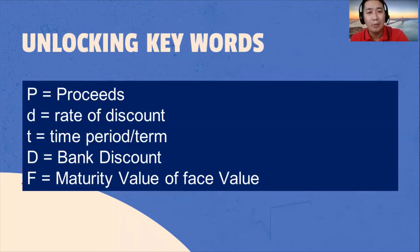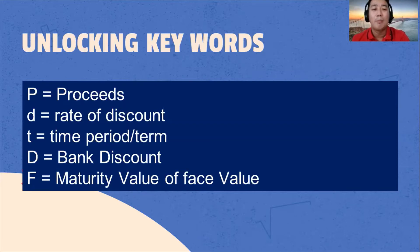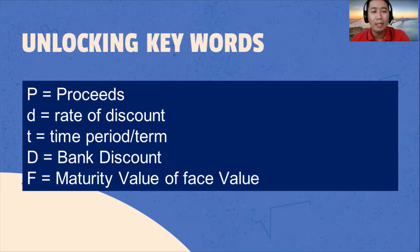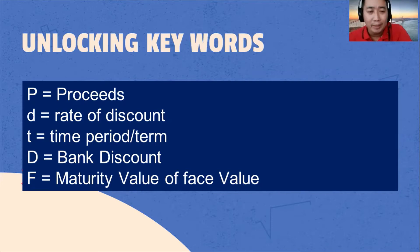Let's now try to unlock keywords. Proceeds — this is the amount of money the borrower receives. Next, the rate of interest, or rate of discount — it is the percentage rate charged on a loan or paid on savings.